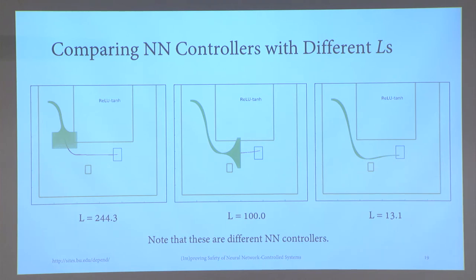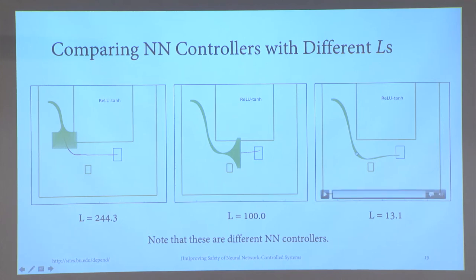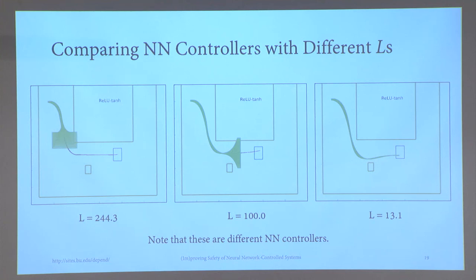These are different neural network controllers — not the same controller. The one with the smaller Lipschitz constant makes a slower turn, but for this task it doesn't matter, since the goal is to reach the target and avoid the avoid set.